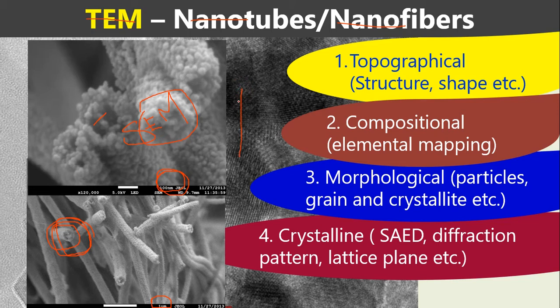The below image is the high-resolution transmission electron microscopy image. It is two-dimensional. In my past video, I already explained the transmission electron microscopy gives us information about the structure and shape, compositional, elemental mapping, morphological information such as particles, grain, and crystallite.